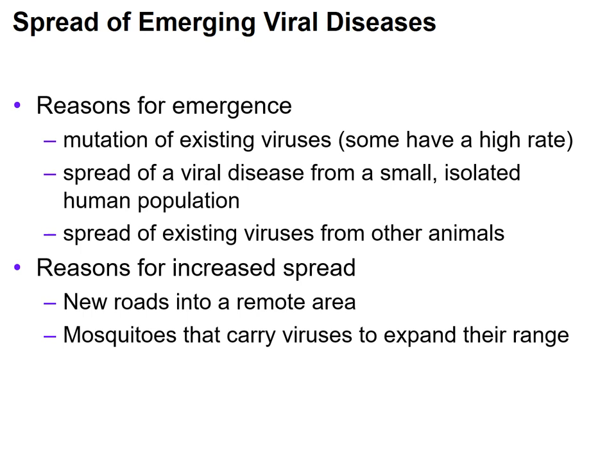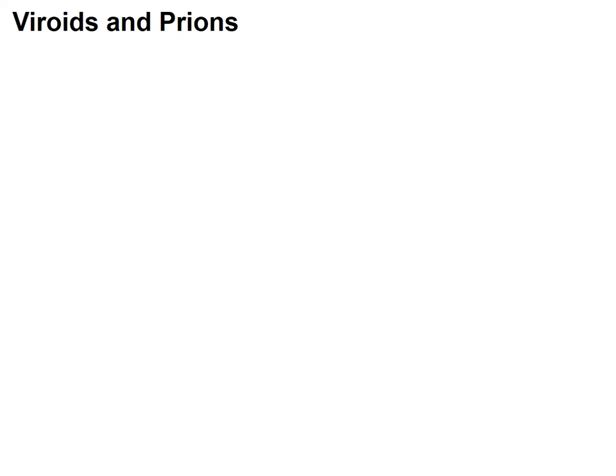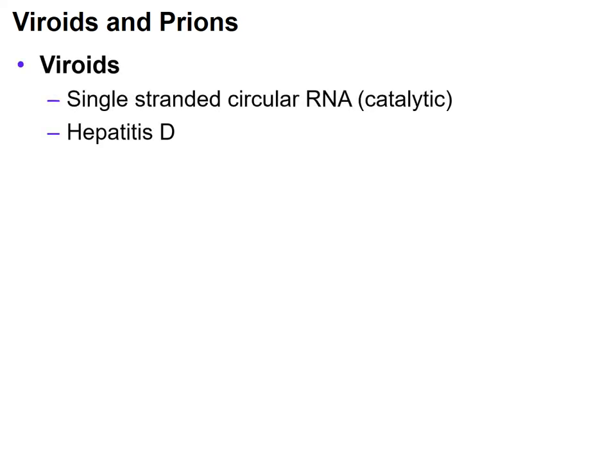Now let's talk about some things that aren't actually viruses — viroids and prions. A viroid is not actually a virus; it's considered a sub-viral particle. A prion is also a sub-viral particle. They don't have all the components of a virus. A viroid is generally a single-stranded circular piece of RNA which is catalytic, so it can actually replicate itself. It was thought that viroids only infected plants, but we have found that hepatitis D is an infection from a viroid, so it can spread in humans as well.